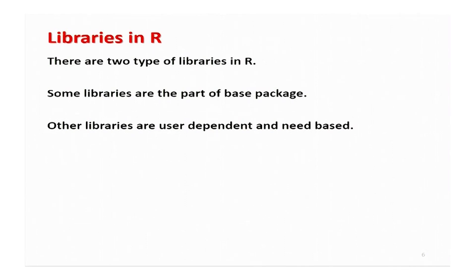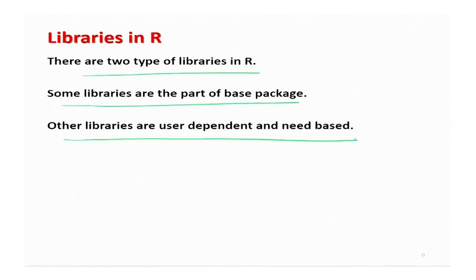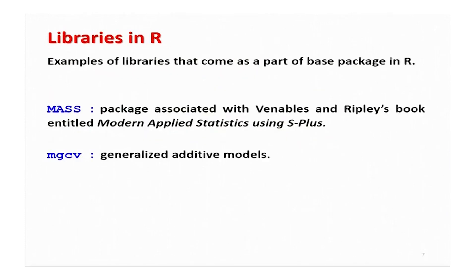There are two types of libraries in R software. Some libraries which are very common, popular, and commonly used have been made part of the base package, whereas other libraries are user-dependent and need-based — you get them when you need them. For example, spatial analysis is a very specialized topic and not everyone needs it, whereas finding arithmetic mean or variance are very common things. So functions like mean, variance, etc. have been made part of the base package, whereas spatial, cluster analysis, etc. are not part of the base package and have to be used separately.